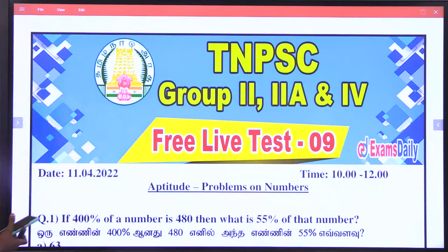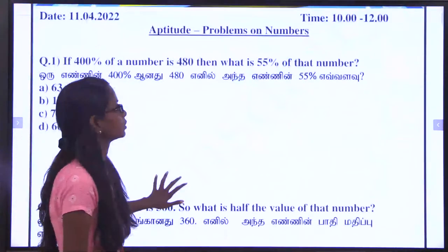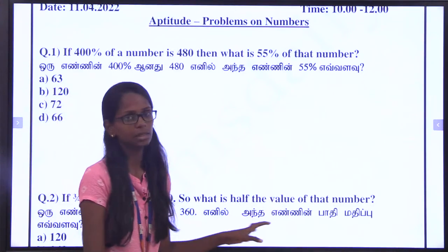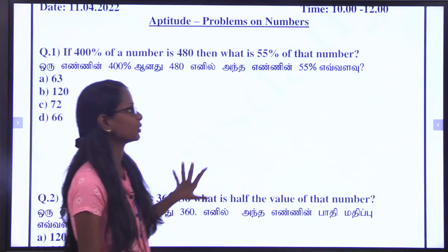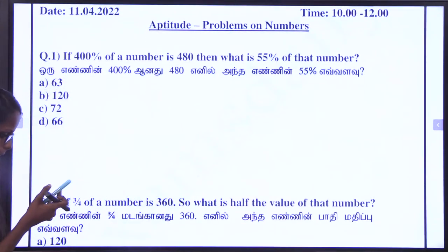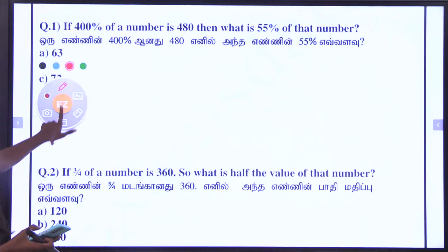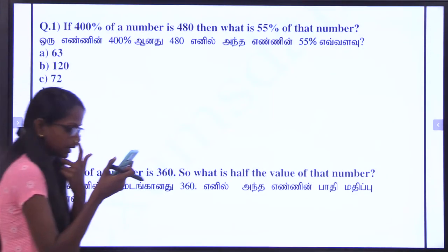Okay, first question. We have already done problems on ages, correct? Problems on ages and problems on numbers are done. So we are going to start the next topic — percentage. It is a very easy topic. Let's see. First question: if 400% of a number is 480, then what is 55% of this number?